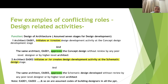Assume there are seven stages for design development. Example one: Architect one (employee code EA001) initiates or creates the design development activities at the concept design stage, and the same architect also approves the concept design without any peer-level or higher-level review. Example two: Architect two initiates or creates design development activities at the schematic level once concept design is approved.